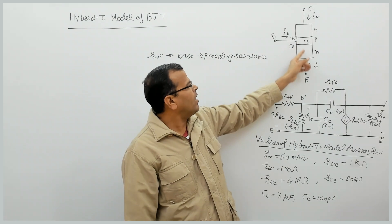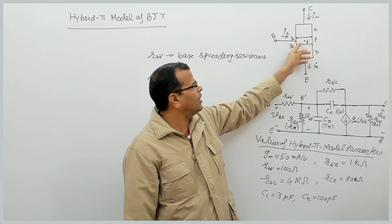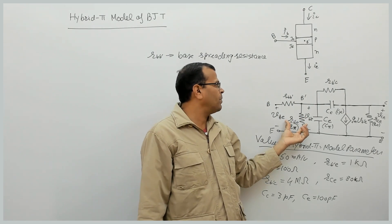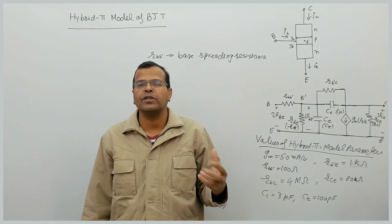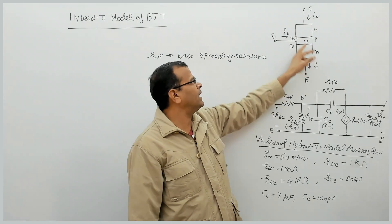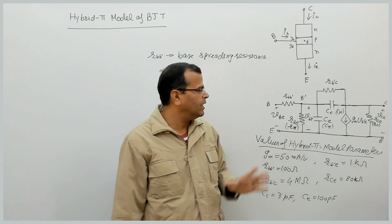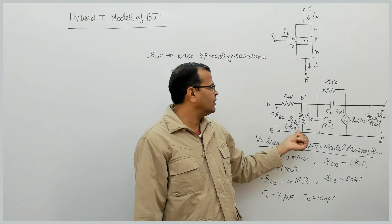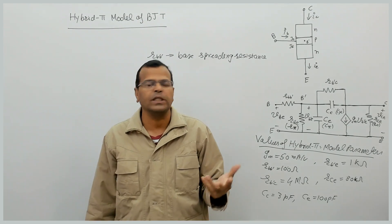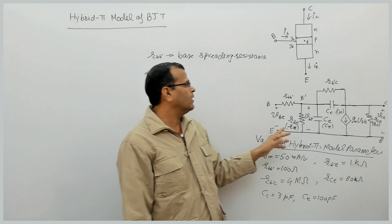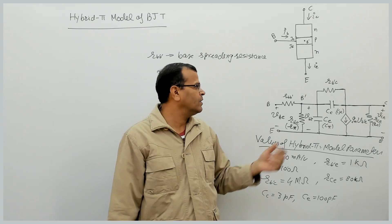Between B' and emitter, we also have a resistance R_B'E, because of the emitter junction. That is the dynamic resistance of the junction between base and emitter. In some textbooks it is denoted Rπ, which is called the input resistance of BJT.